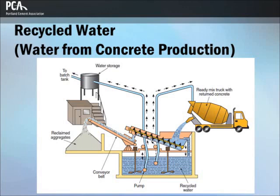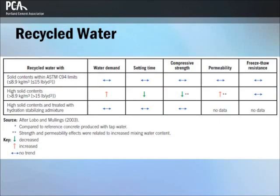Recycled water from concrete production operations with solid contents exceeding 9 kg per cubic meter or 15 pounds per cubic yard may adversely impact the properties of concrete through increased water demand, accelerated setting time, lower compressive strength, and higher permeability due to the associated higher water-to-cementitious materials ratio (w/cm).